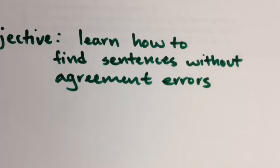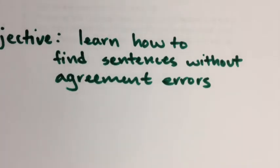Thanks for watching this video. This is Mr. Pritchard. Today our objective is to learn how to find sentences without agreement errors. I will show you four sentences at a time, and our task is to find the one without agreement errors. We're talking about subject-verb agreement and pronoun-antecedent agreement.